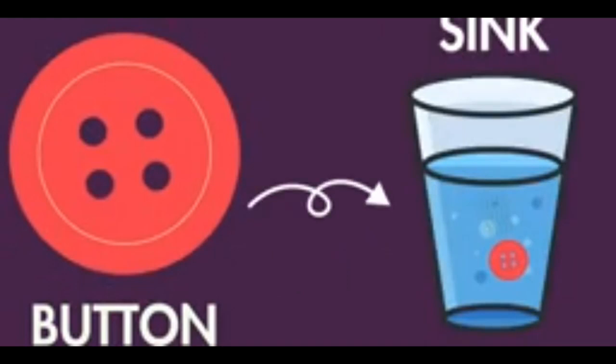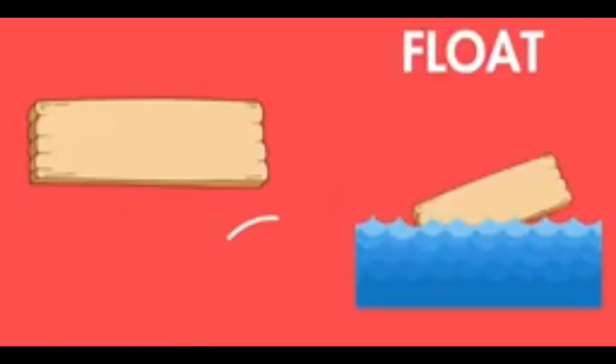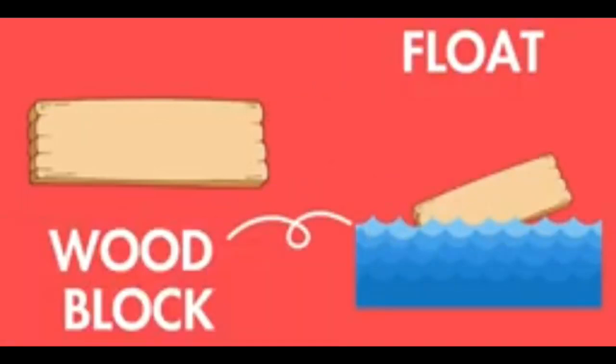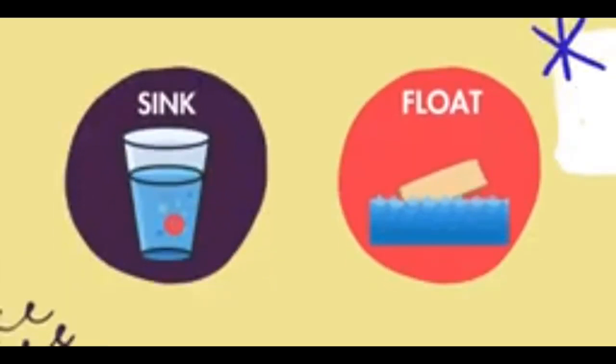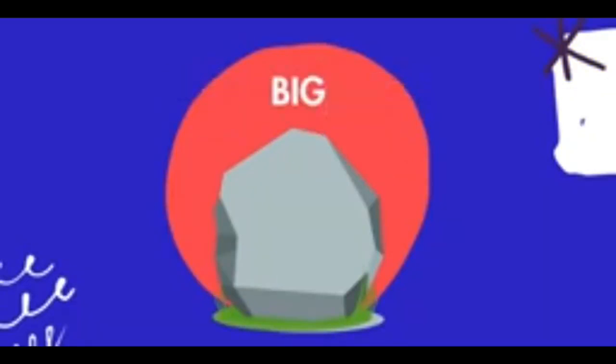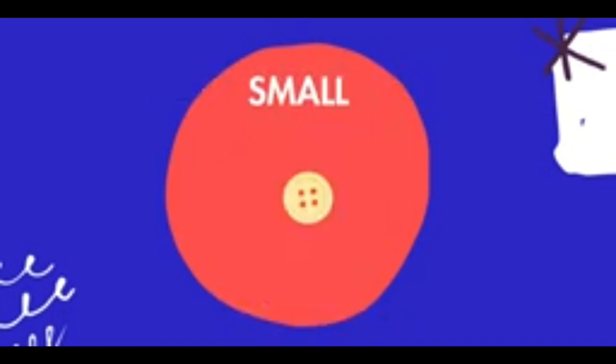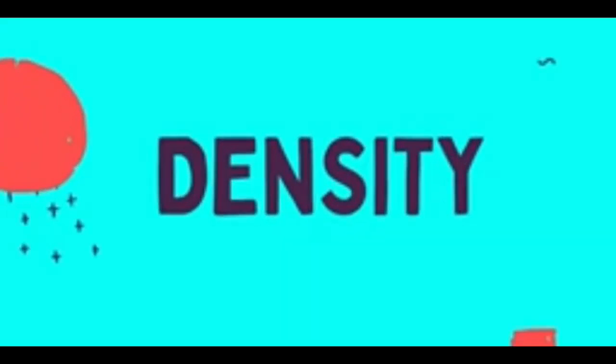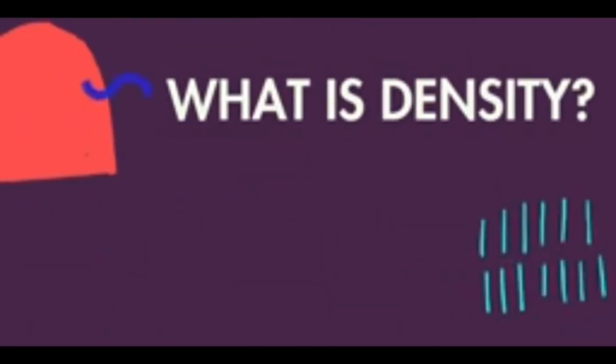An object might seem sort of heavy, like a wooden block, can float. That's because whether an object will sink or float in water doesn't just depend on how heavy it is or how big or small it is. It also depends on its density. What is density?